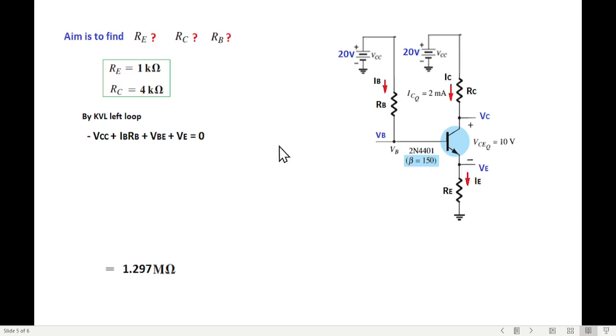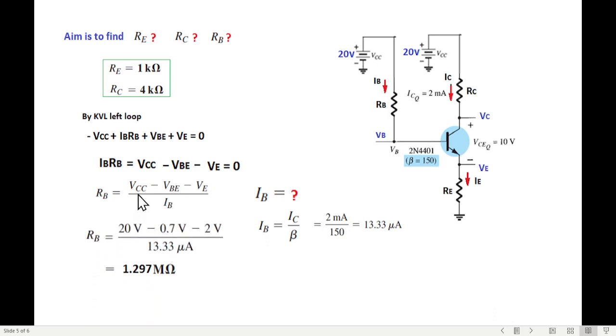Two values we have found, and now we take the left loop to find RB. This is VCC for this left loop. KVL equation: minus VCC, IBRB, here is VBE, and then VE. From here we separate IBRB, and then RB is VCC minus VBE minus VE over IB. Now we could put all these values, but we don't know what is IB. But since we know IC, we can calculate IB. We know this relation that beta times IB is equal to IC, or IB is IC over beta. IC we know, beta is given from here as 150, so IB is 13.33 microamperes. Now putting in values of all the variables: 20 volts VCC, VBE we know that in case of a silicon transistor it is 0.7 volts, minus 2 volts, and this current. So the RB value is 1.297 megohms.